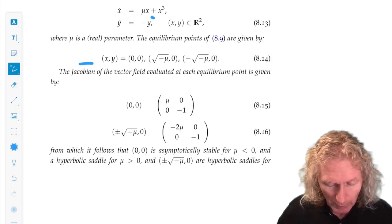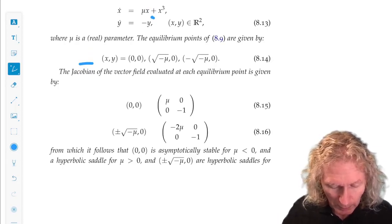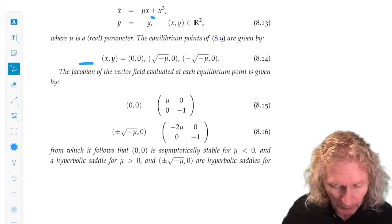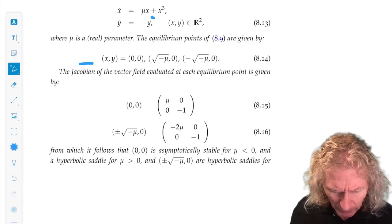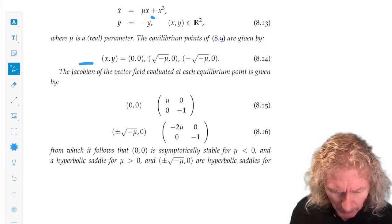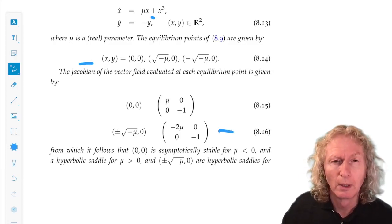And for μ negative, we see that the origin is stable. It's unstable for μ positive. For μ less than 0, these two equilibria are unstable.